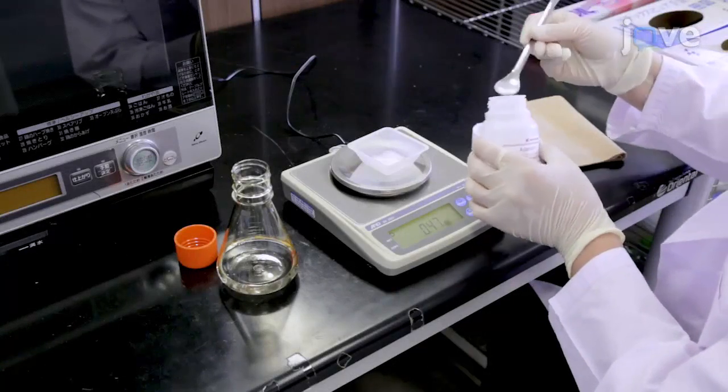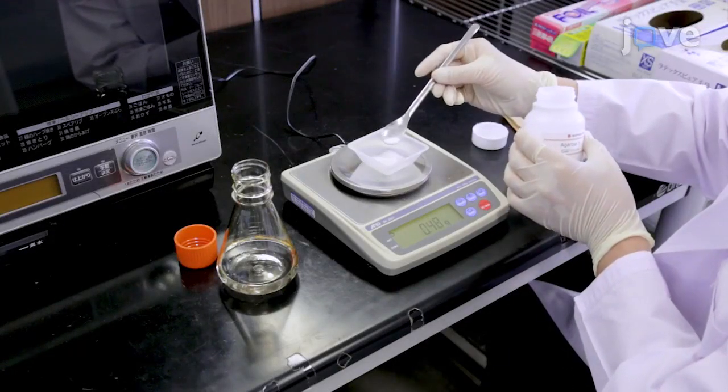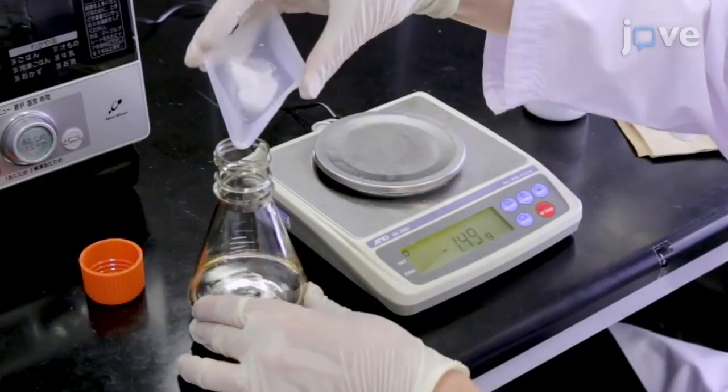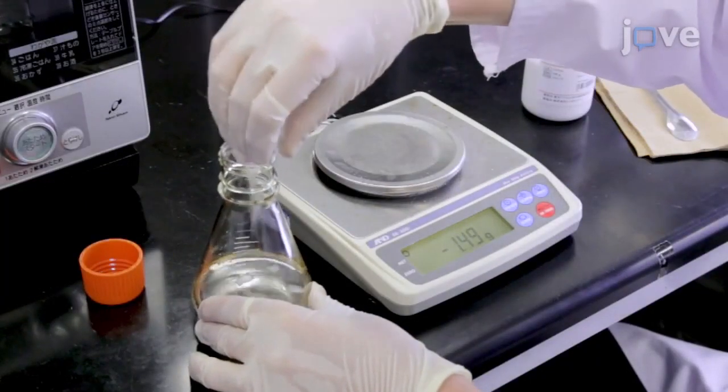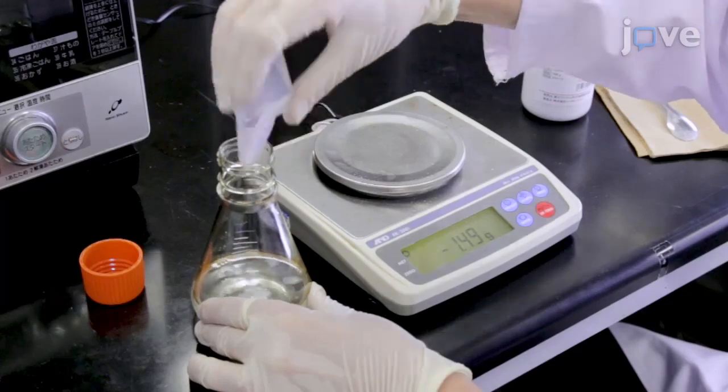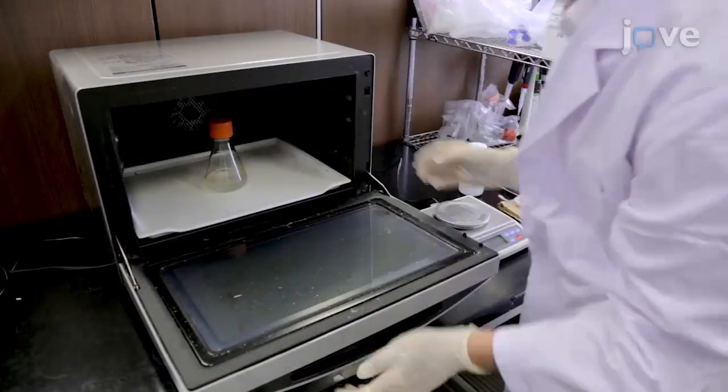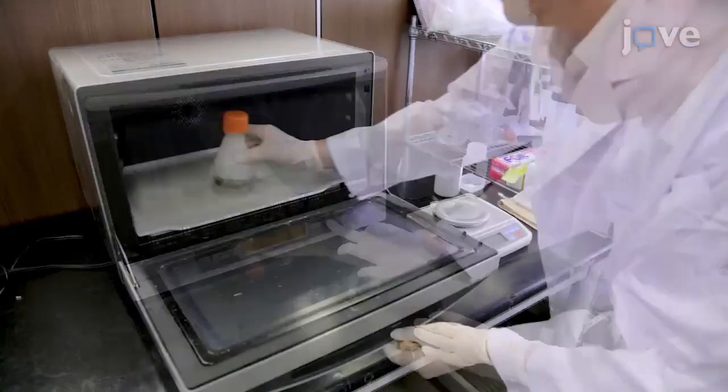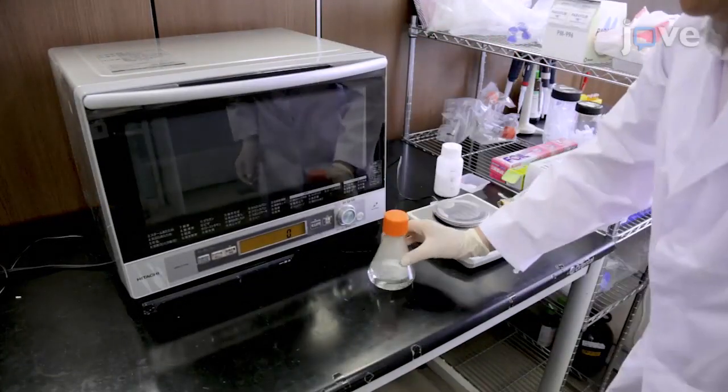To begin, prepare 0.5% agarose by dissolving 500 mg of agarose in 100 ml of distilled water in a 250 ml conical flask. Place the flask in a microwave at the power of 800 watts to heat about 1 to 3 minutes. Cool the flask at room temperature.